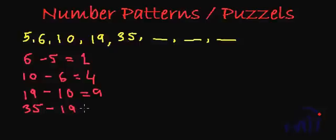Okay, so we have found the differences between two consecutive terms. The difference between first and second term is 1, third and second term is 4, fourth and third term is 9, and fifth and fourth term is 16.